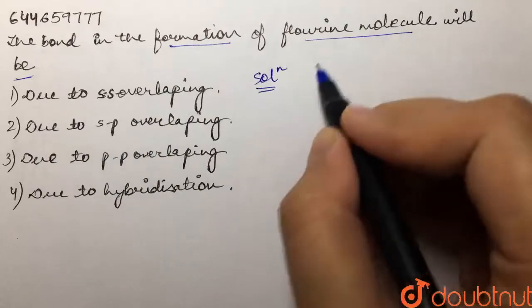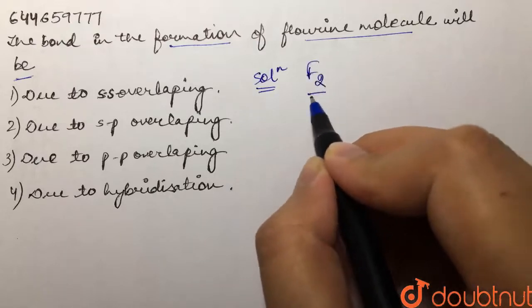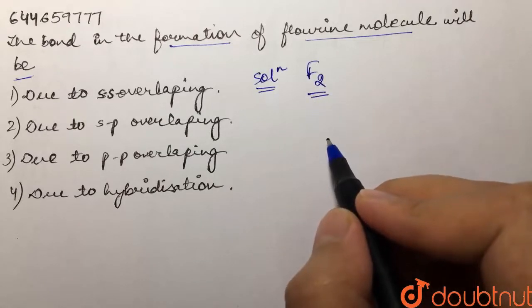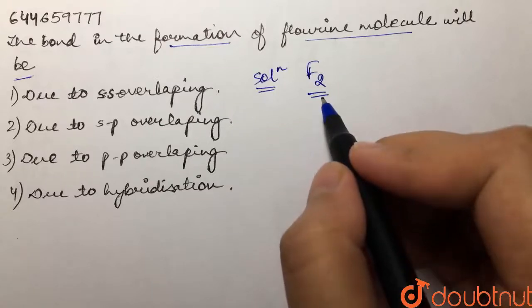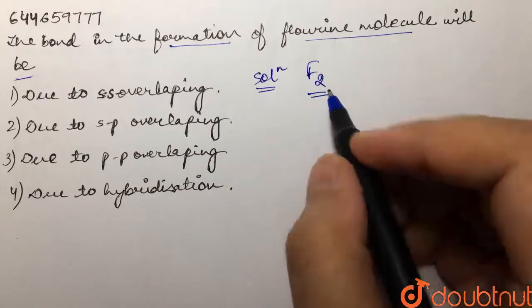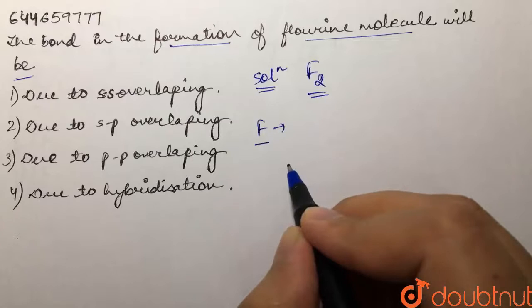So we have to tell what kind of overlapping takes place between a fluorine molecule. Now we know, if we talk about fluorine atom, we know it has a configuration...